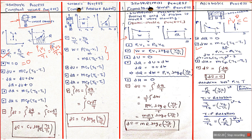To summarize work done: zero for isochoric; for isobaric, either mR(t2 − t1) or p(v2 − v1); for isothermal, p1 v1 log to the base e of (v2/v1) — alternatively, (v2/v1) can be replaced by (p1/p2); for adiabatic, either mcv(t2 − t1) or (p1 v1 − p2 v2) upon (gamma − 1).